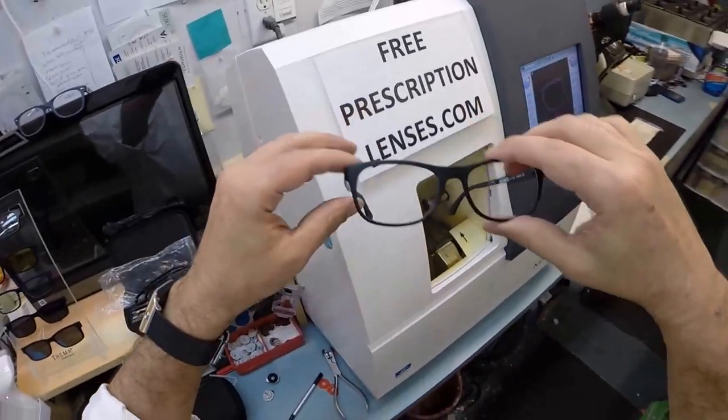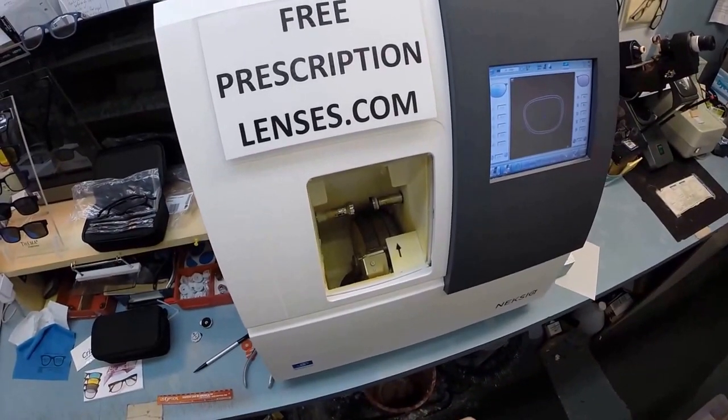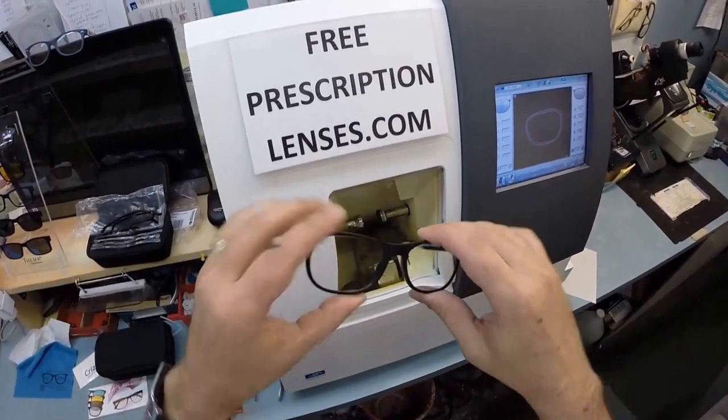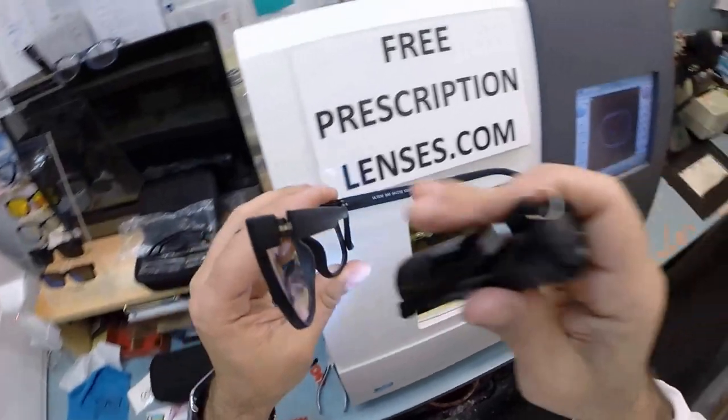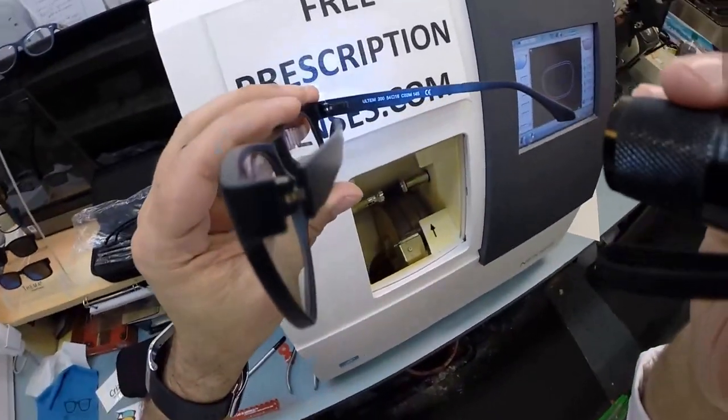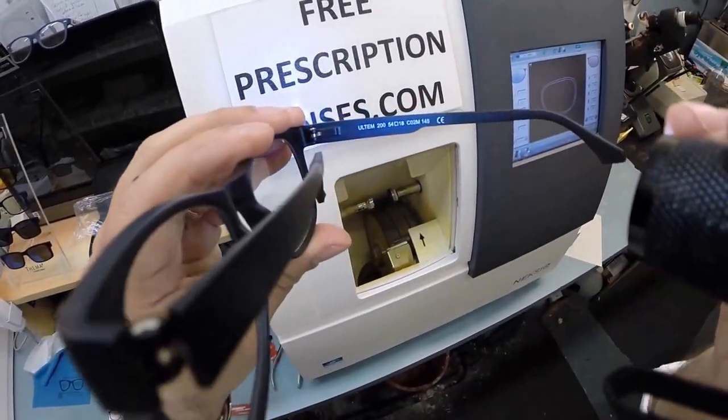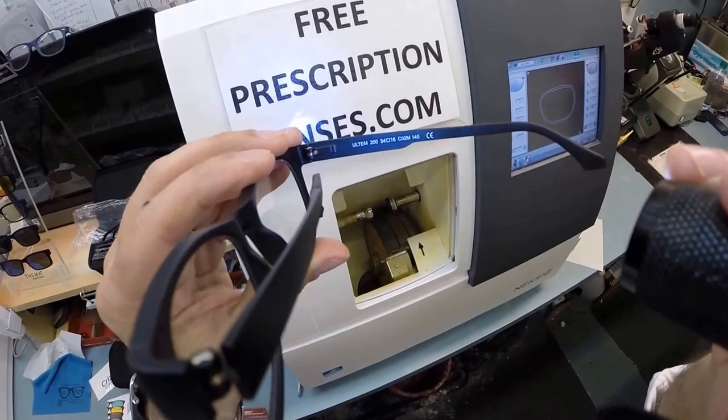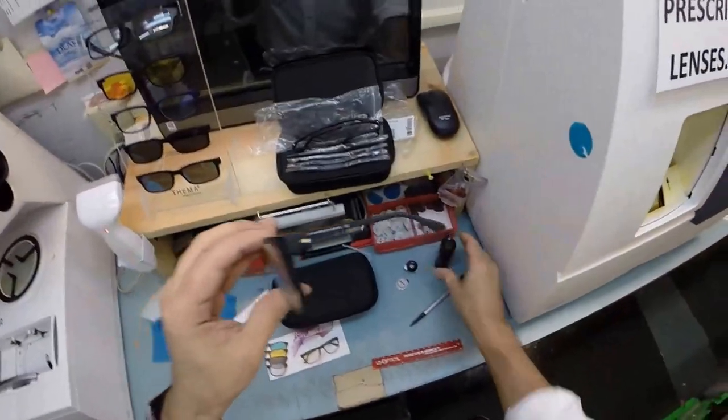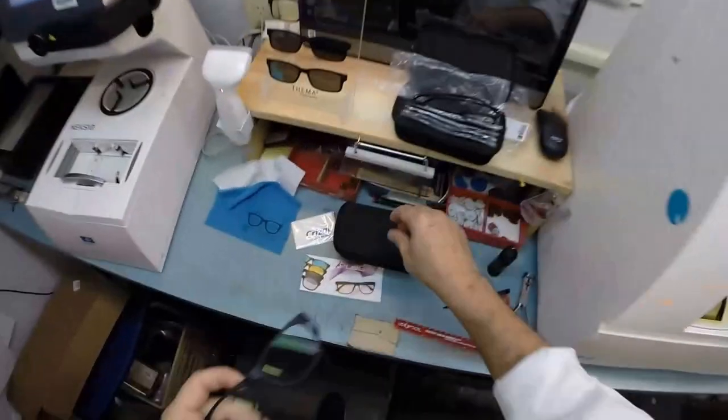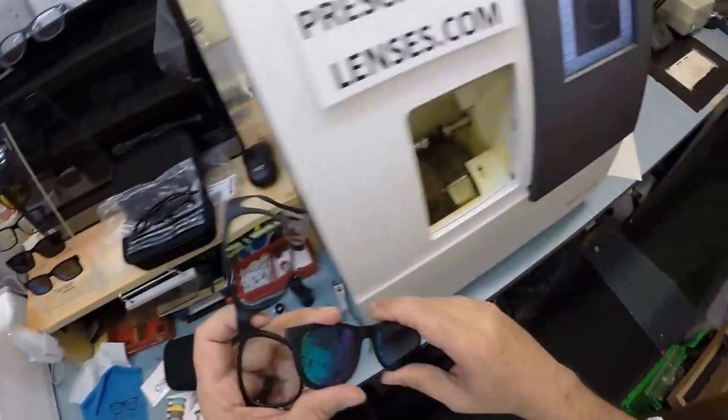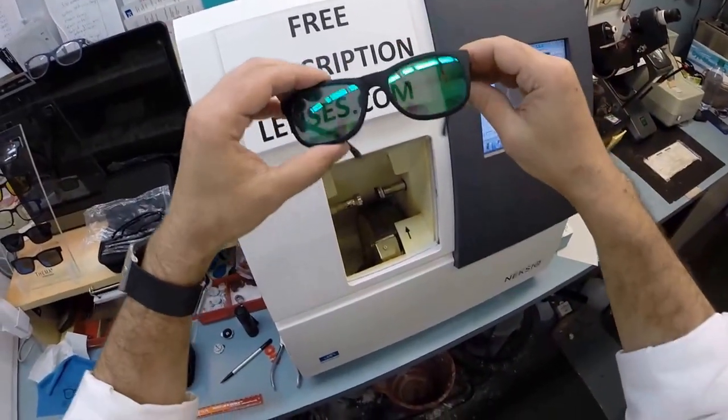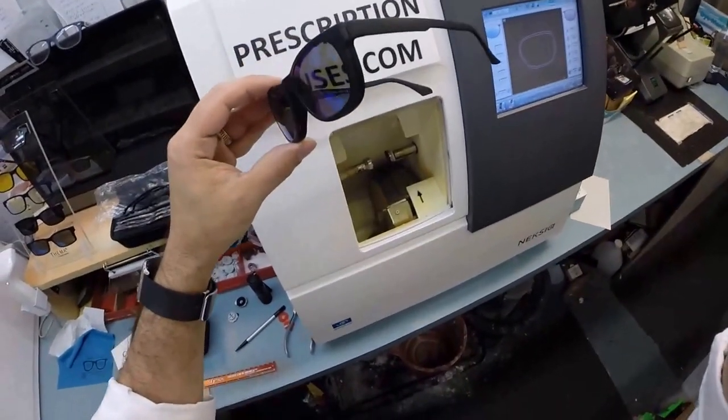If anyone has any questions, just email me at freeprescriptionlenses at gmail.com or simply click the contact me button on the website. Scott in Raleigh, I hope you enjoyed watching as I cut prescription lenses with your invisible bifocal with Crizal anti-glare for your Ultem 200, eye size 54 in color 2. And hopefully everyone else has got the chance to see how I bring that love and feeling back to glasses. Thank you.